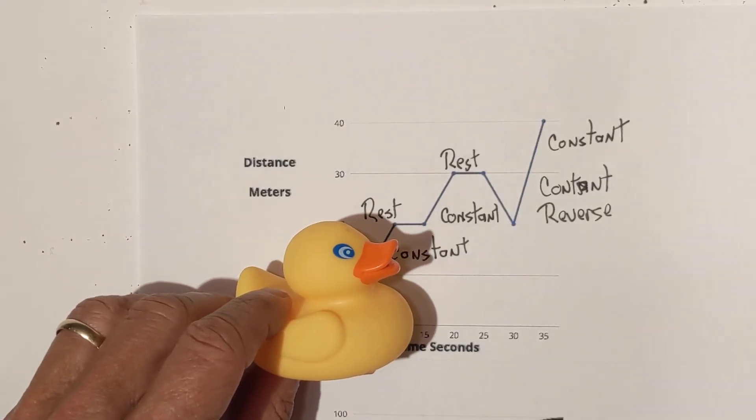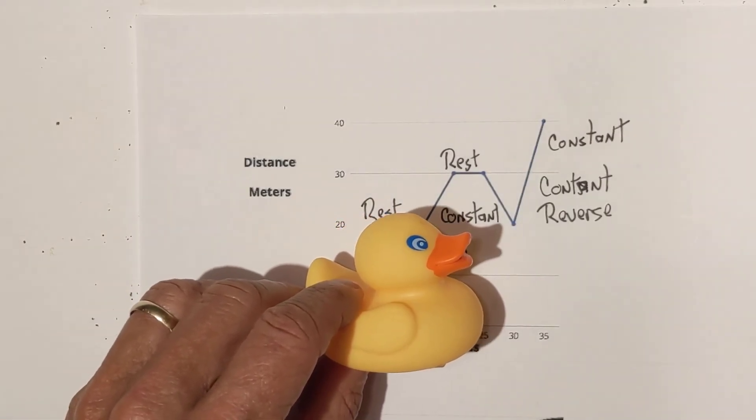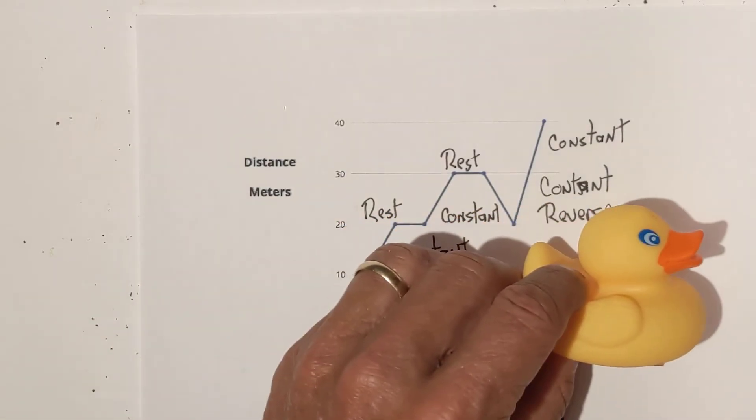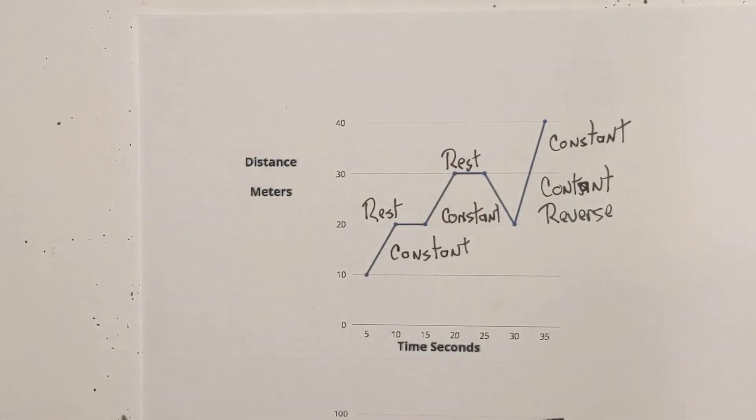Constant speed forward, rest, constant speed, rest, backwards, forwards. Okay, I hope that is helpful. And then we have one final type of graph you may see and let's see what it tells you.